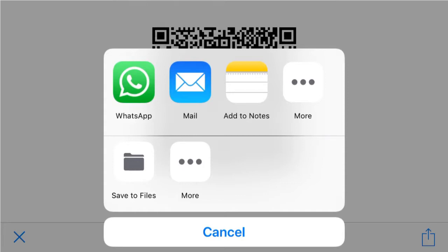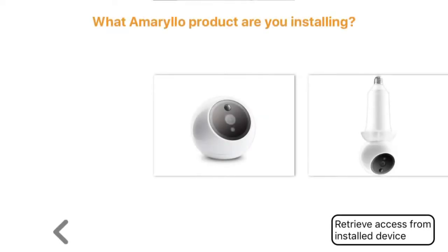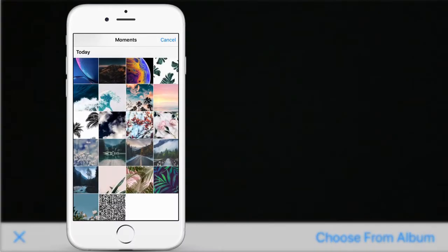Once the code has been shared, the recipient can open the Amarillo app. If the device has never installed any other camera before, you will arrive at the installation page. Simply tap on retrieve access from installed device, then choose from album.